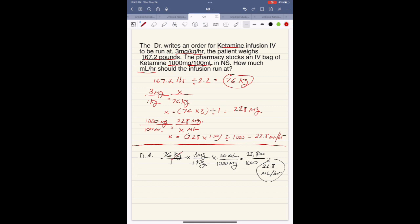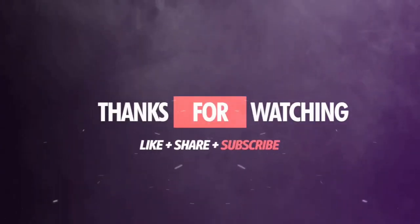Now cancel out the units, and you'll see you're left with milliliters per hour. Cancel the kilograms with kilograms, the milligrams with milligrams, and you're left with milliliters. So the answer is 22.8 milliliters per hour.